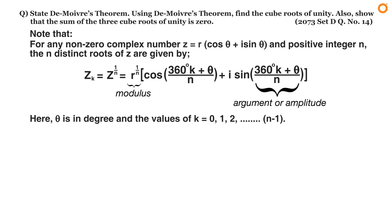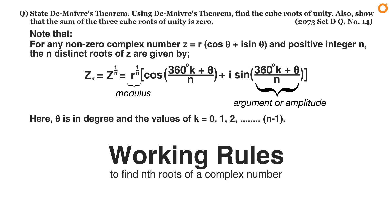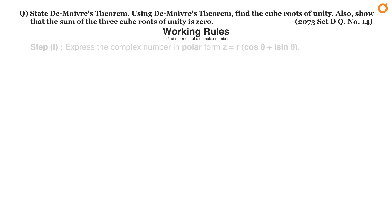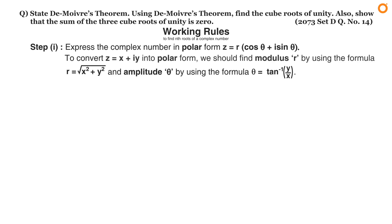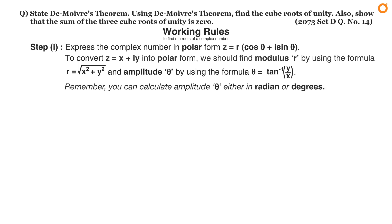Now before finding the cube roots of unity, let's learn the working rule to find the nth roots of a complex number. In step one, express the complex number in polar form z equals r times (cos theta plus i sin theta). To convert z equals x plus iy into polar form, find the modulus r using r equals the square root of x² plus y², and find the amplitude theta using theta equals tan inverse (y divided by x). You can calculate amplitude theta either in radians or degrees.